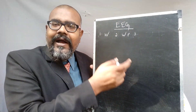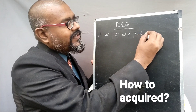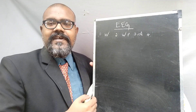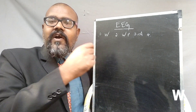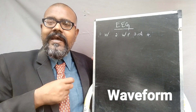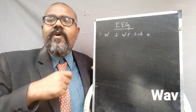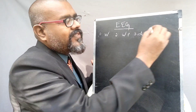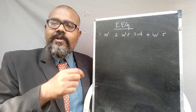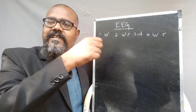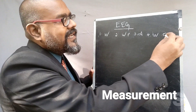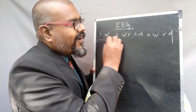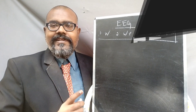The third question is: how are we able to acquire this EEG signal from the human body? The fourth question is: what is the waveform we get after acquiring from the human body — what does the waveform look like? The fifth question is: what are the things we are going to analyze using the EEG waveform? These are the 5 important questions we need to answer.